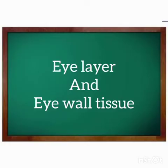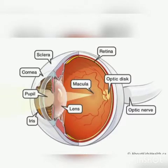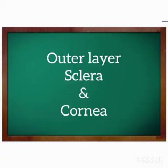Now let's see the eye layers and eye wall tissue. First is the outer layer — sclera and cornea — made of fibrous tissue, as you can see in the picture. Second is the middle layer — choroid, ciliary body, and iris — made of vascular and uveal tissue, which you can also see in the picture. Third is the inner layer called retina, made of nervous tissue, where nerve endings, nerves, and fibers are present which get stimulated.